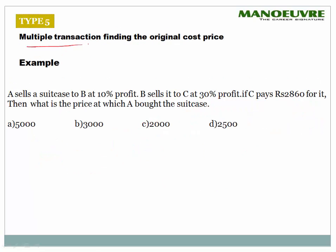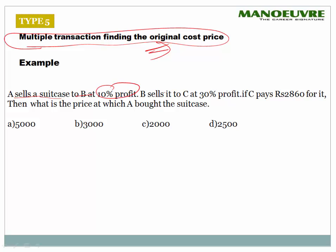Type 5: multiple transactions — finding the original cost price. A sells a suitcase to B at 10% profit, B sells it to C at 30% profit. If C pays 2860 rupees for it, what is the price at which A bought the suitcase?